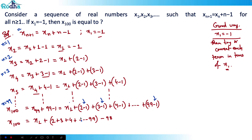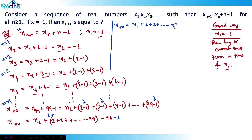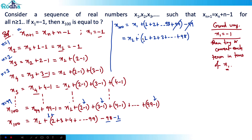Adding 1 inside and subtracting 1 outside: x100 = x1 + (1 + 2 + ... + 99) − 99. The +1 inside and the 99 outside simplify so that the 99 terms cancel with adjustments, giving x100 = x1 + (1 + 2 + 3 + ... + 98).